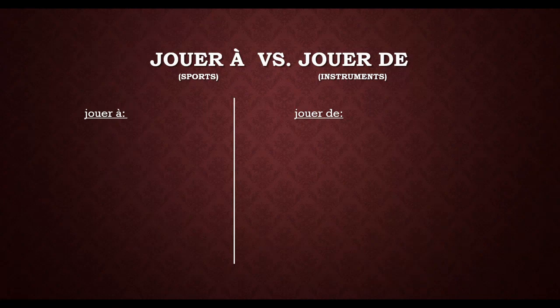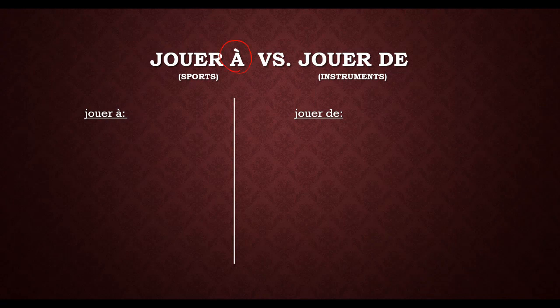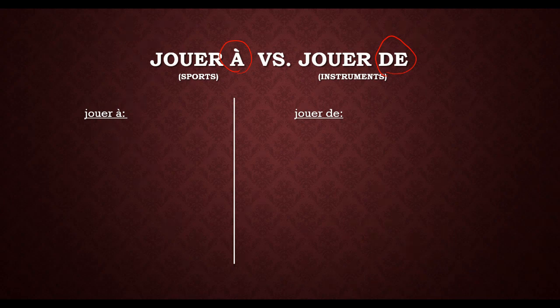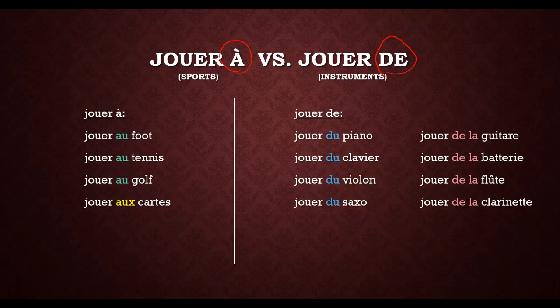Now, jouer is used in two different ways in English — to play sports and to play instruments. In French they use jouer for both, but with different prepositions. If you are talking about sports, it's going to be jouer à. If you are talking about musical instruments, it's going to be jouer de. We'll still need to use those contractions we learned with à and de.